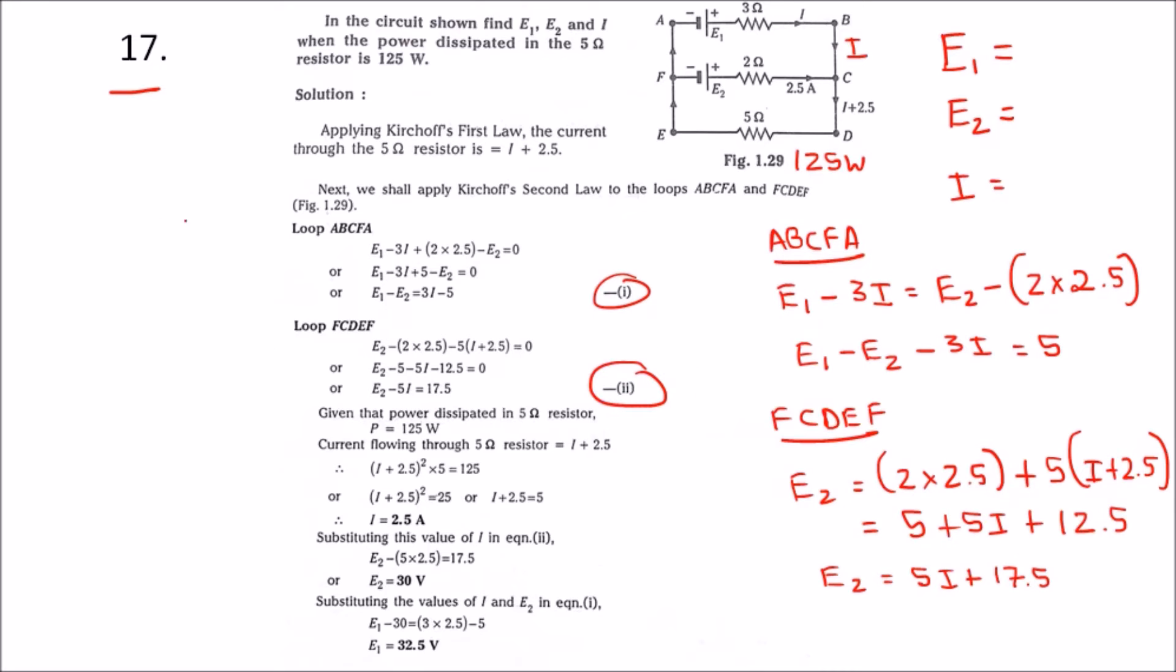They have given that the power across the 5 ohm resistance is 125 watts. We know the power formula is VI. If we further simplify this, we will get I squared R.